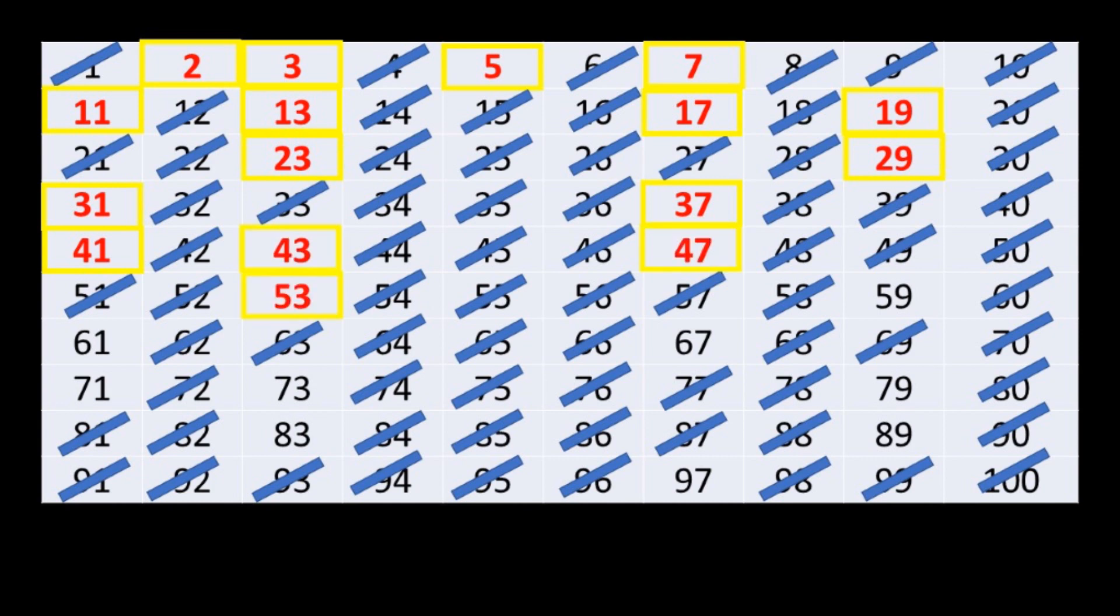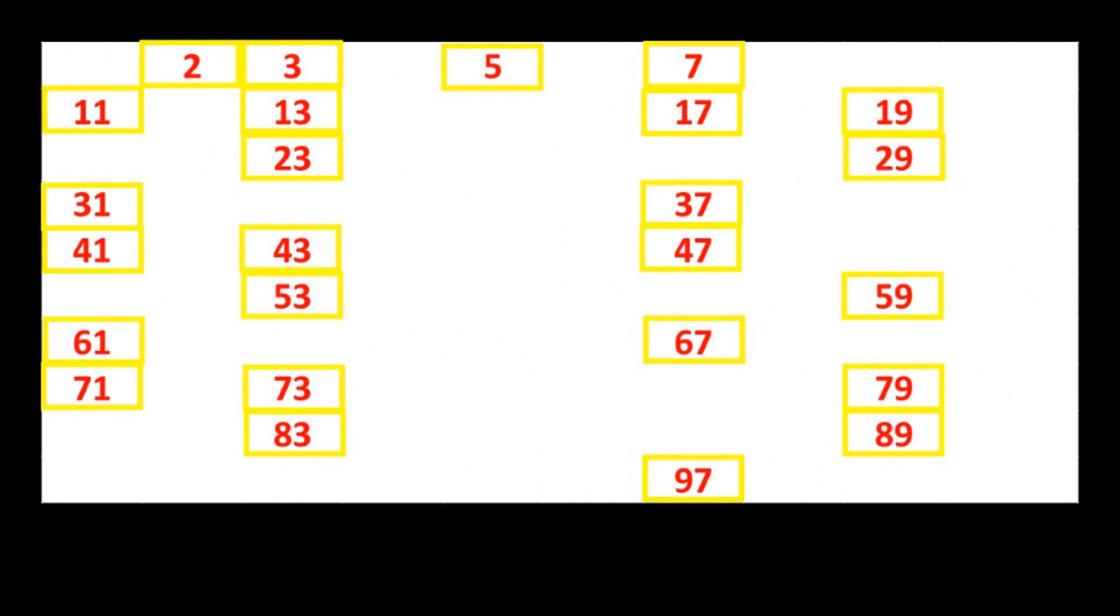Continuing with 53, 59, 61, 67, 71, 73, 79, 83, 89, and 97. These are all prime numbers between 1 and 100.